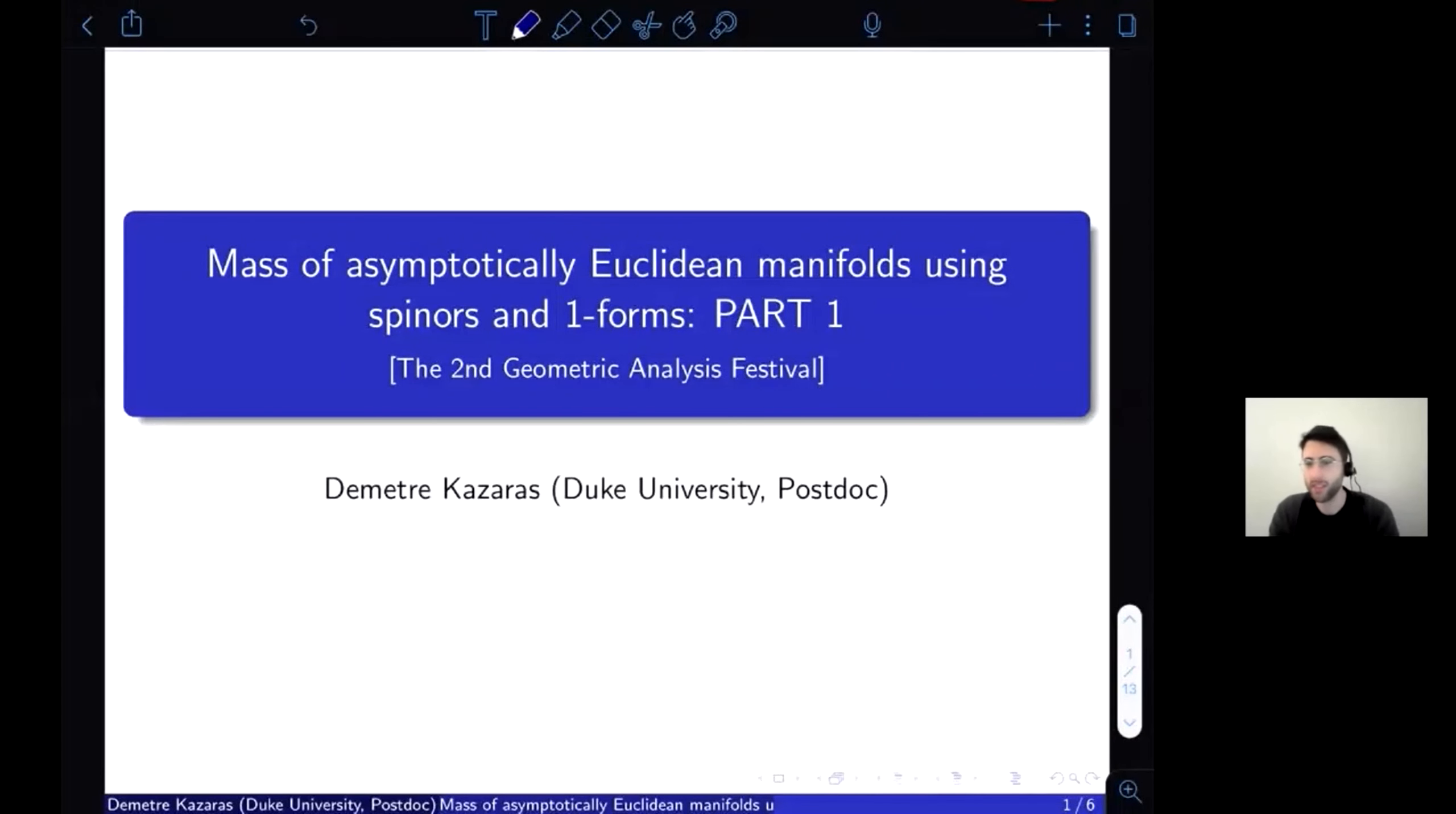All right, hello. I'm Dimitri. Welcome to the first lecture. I'd like to tell you about massive asymptotically Euclidean initial data sets, or asymptotically Euclidean manifolds, by means of spinors and one forms.